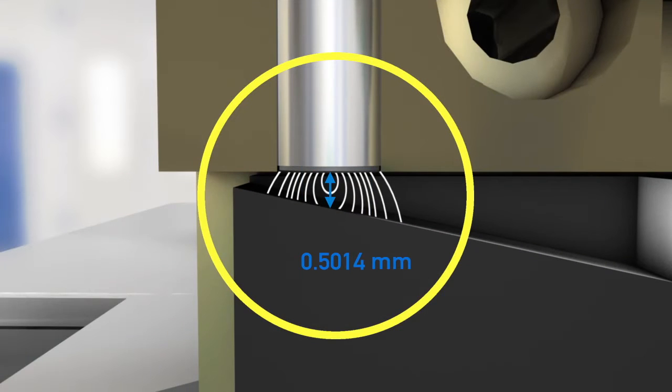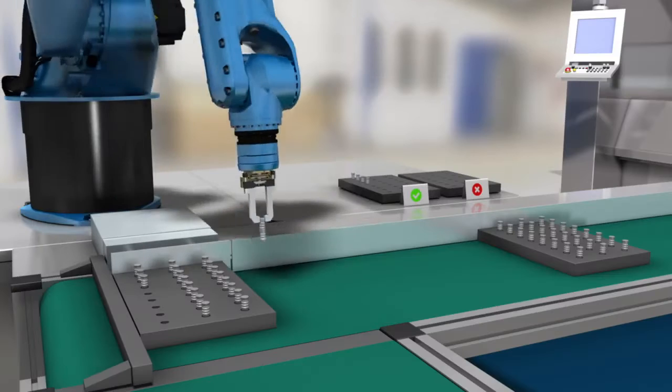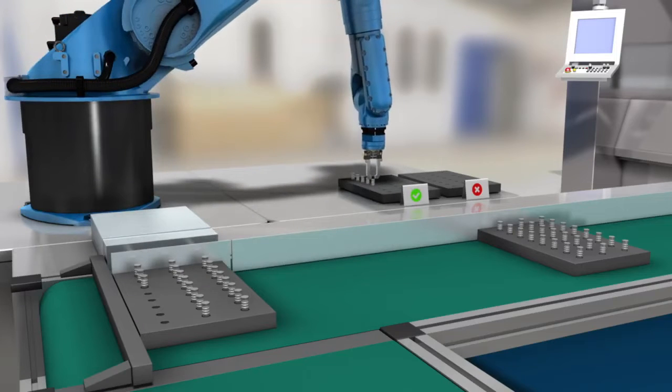The sensors measure position changes with micrometer accuracy so that the sensor also detects good or bad parts.